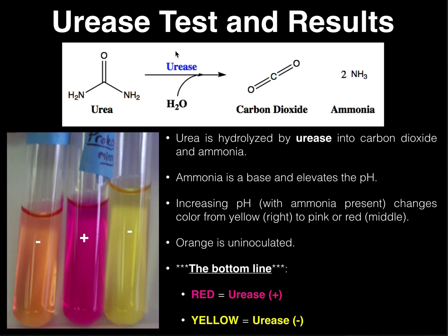That's going to be coming up in a couple of weeks, so know this enzyme. What urease does is it performs urea hydrolysis — thus the name of the test. It's going to use water, H2O, to break apart urea, and what you essentially get out of it is carbon dioxide and two molecules of ammonia. Ammonia has the chemical formula NH3. The carbon dioxide we really don't care about, but if urease is present it breaks urea down into these molecules of ammonia.